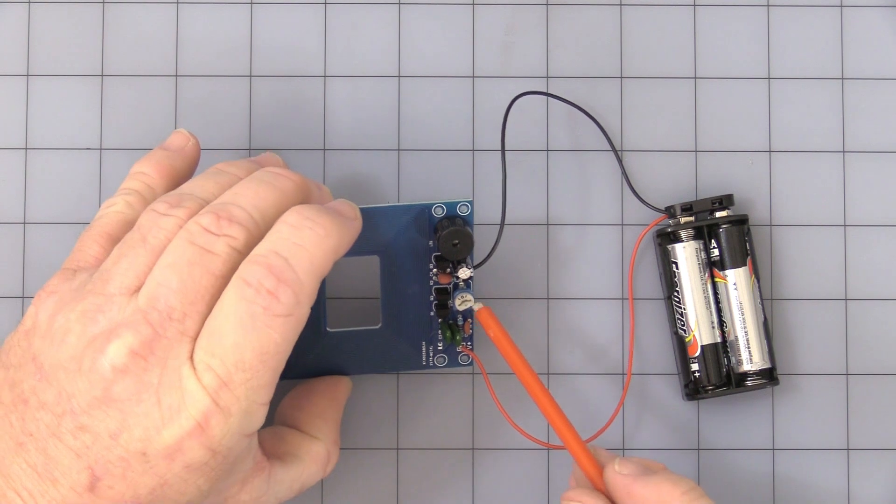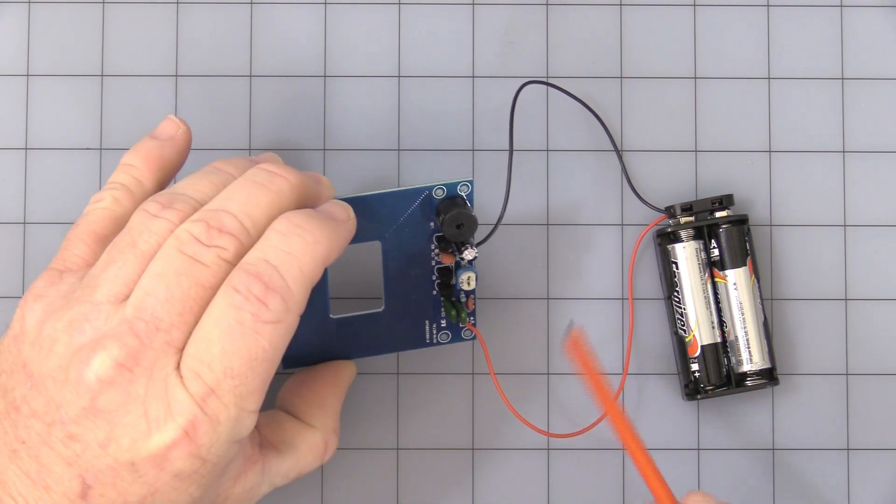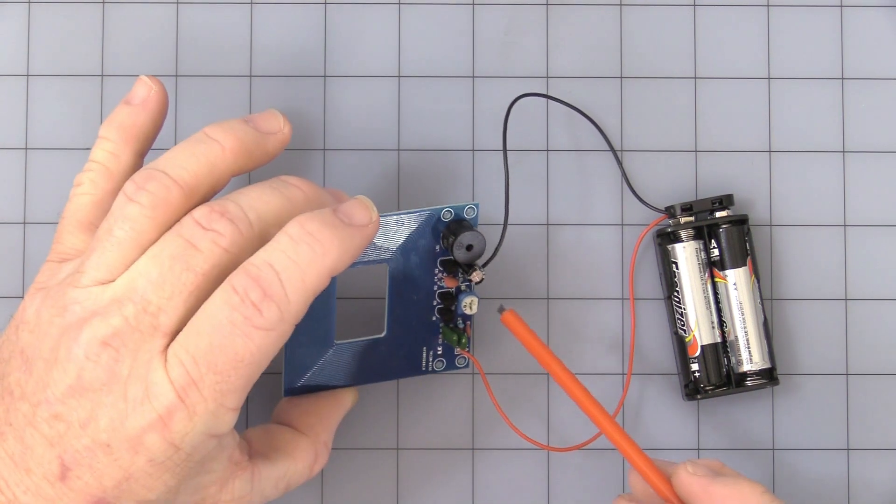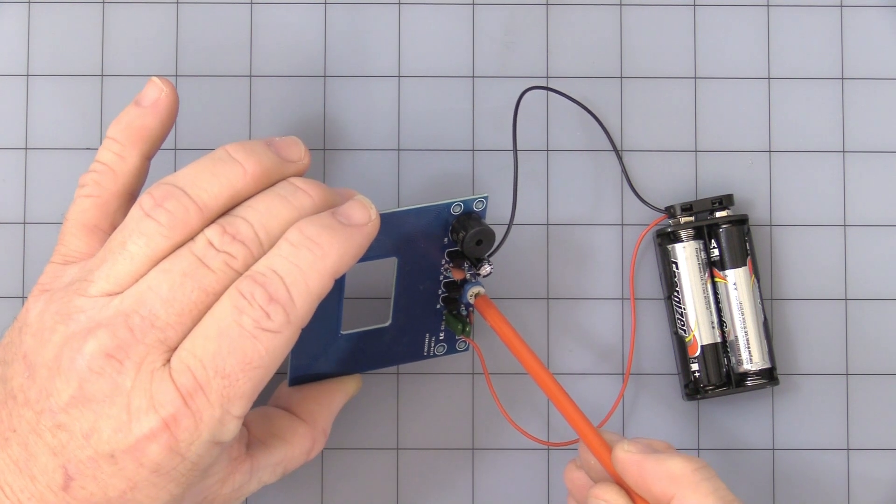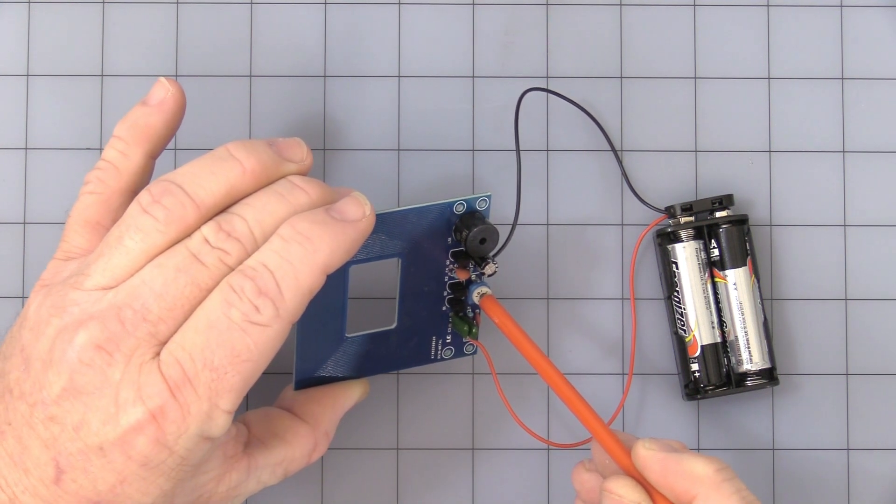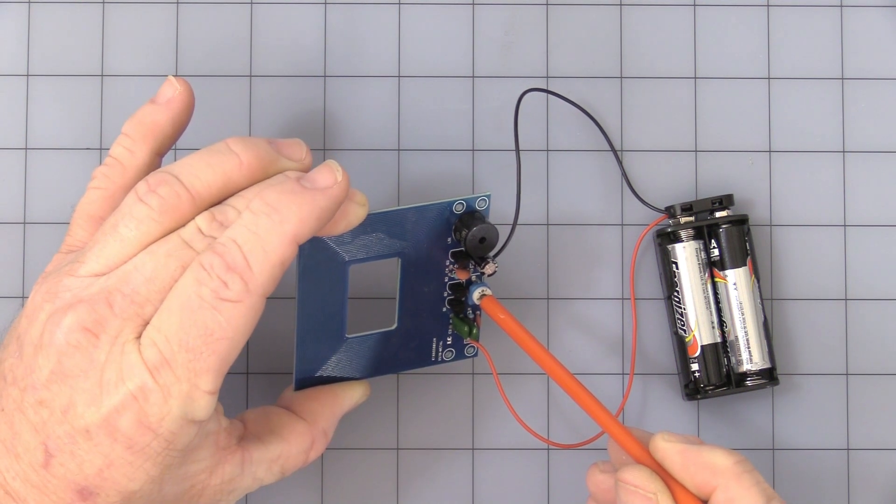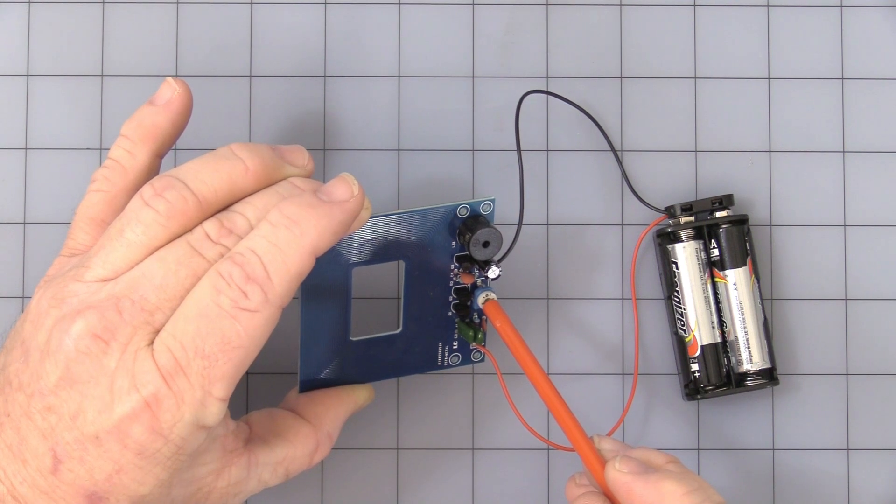So what I would recommend doing is turning the sensitivity pot all the way counterclockwise and slowly start turning it up until you hear it just start buzzing. Turn it back just a little bit until it stops.